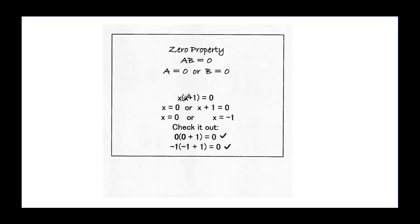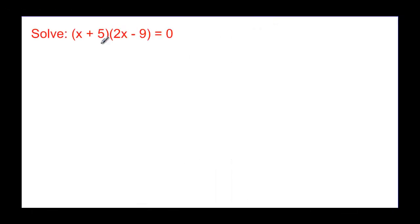And if we put negative one in for both x's: negative one times (negative one plus one) gives us negative one times zero, so again we're multiplying by zero, so it's equal to zero. So let's practice.